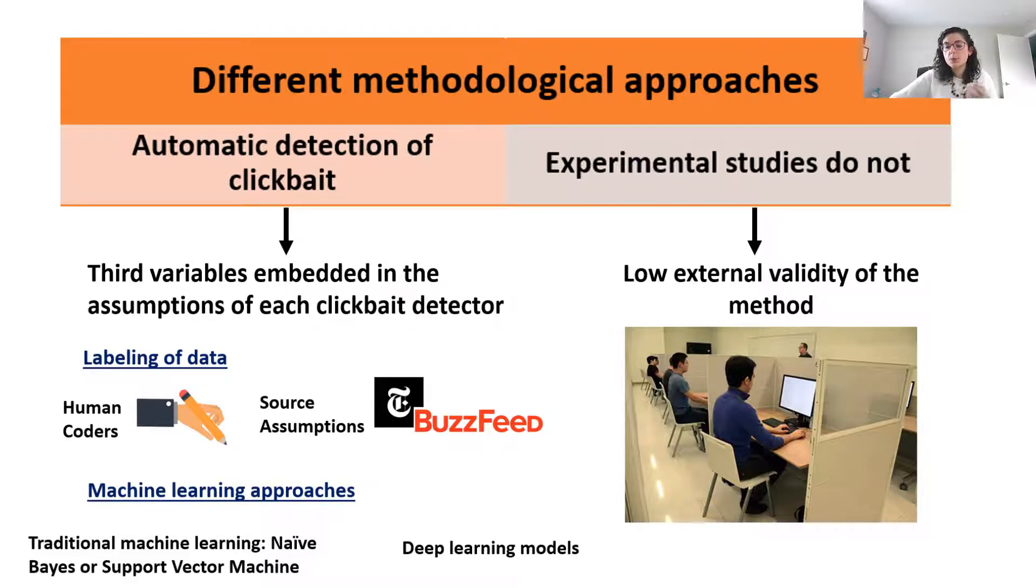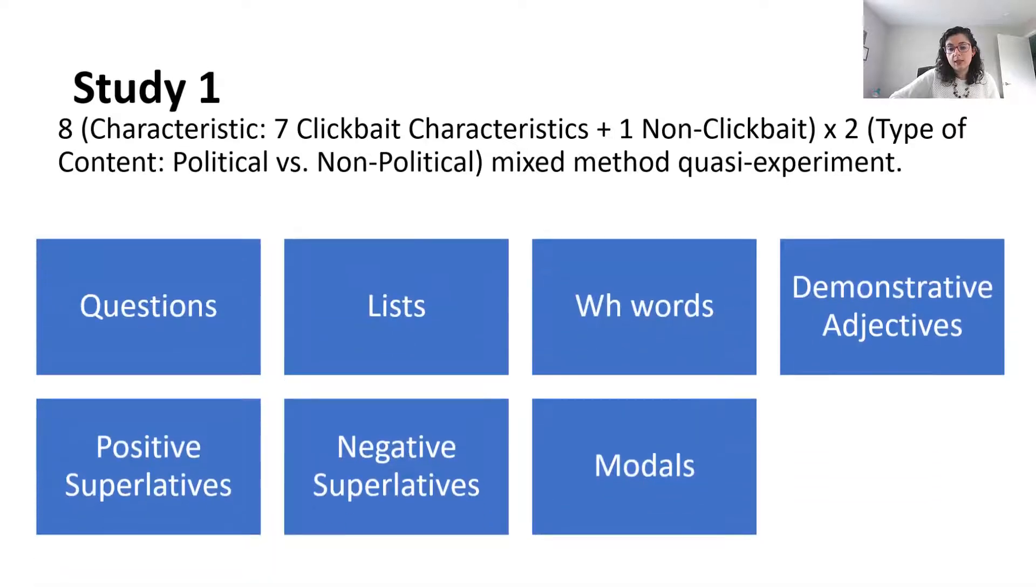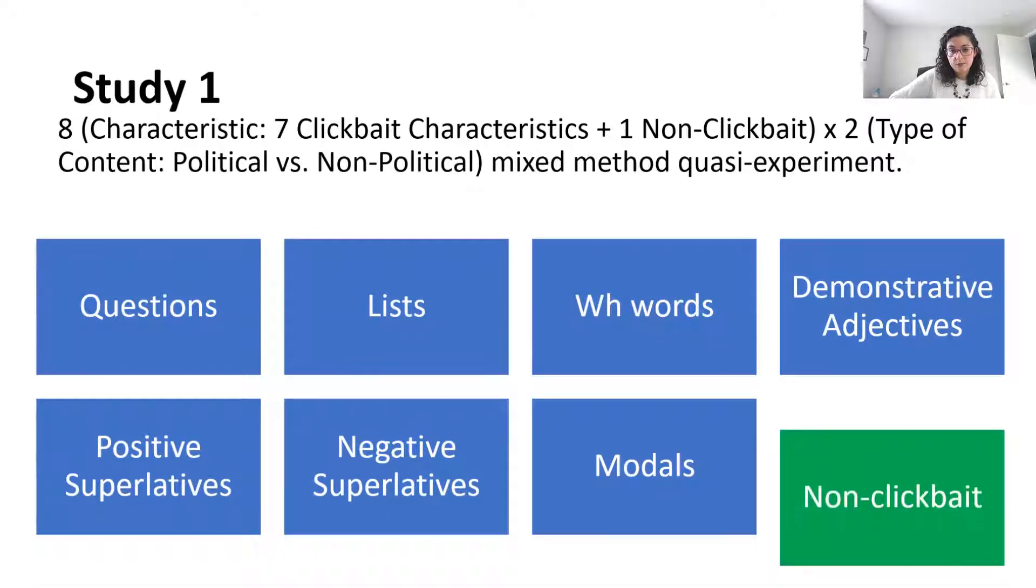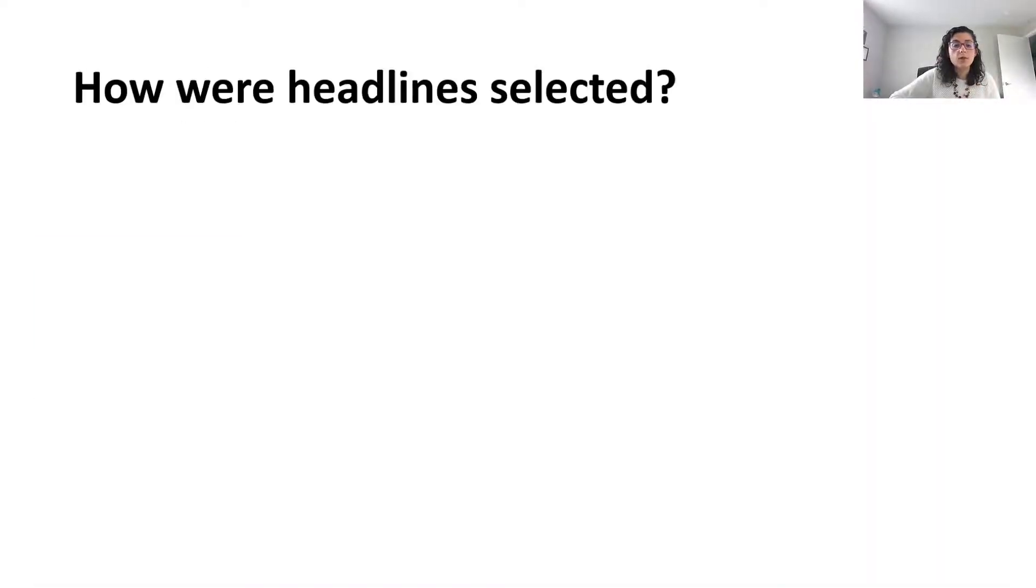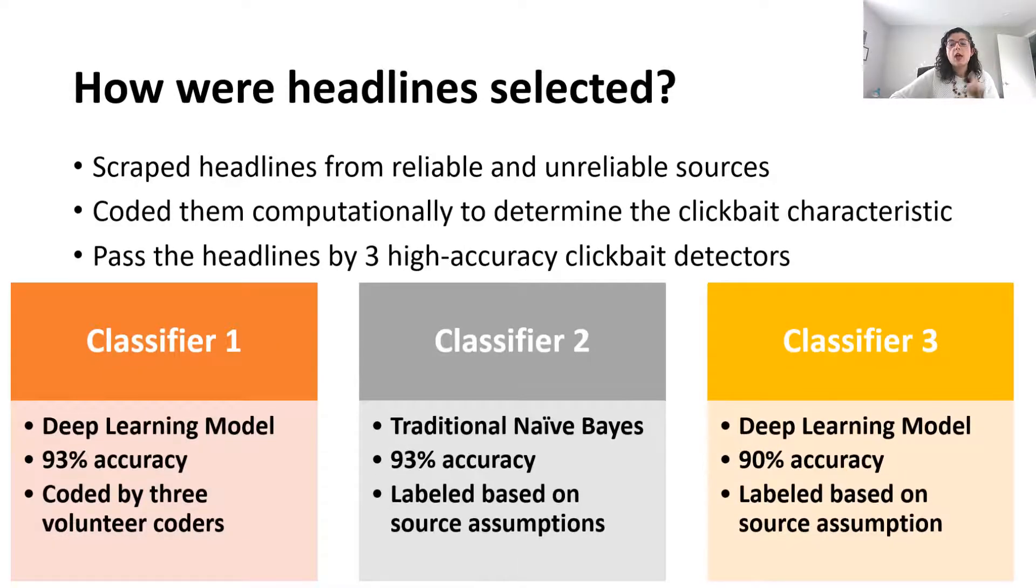So we explored these possibilities via three studies. And in the first study, participants were asked to engage with seven different clickbait headlines and non-clickbait headlines. And we scraped headlines by following the following procedure. First, we scraped headlines from reliable and unreliable sources. We coded them computationally to determine the clickbait characteristic. And we passed the headlines by three highly accurate clickbait detectors. And we only used headlines that were classified as clickbait by the three classifiers.